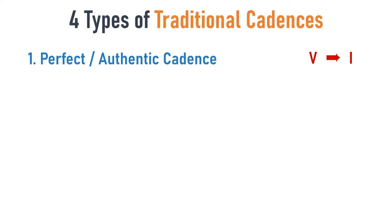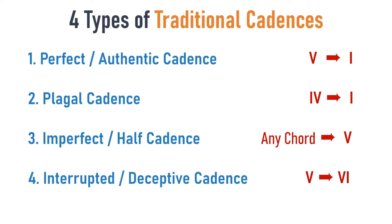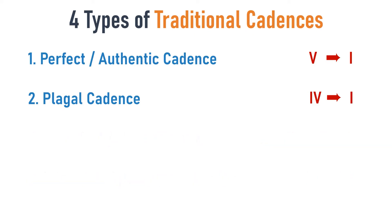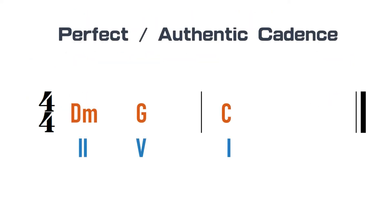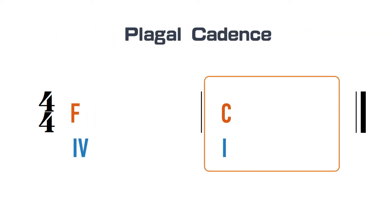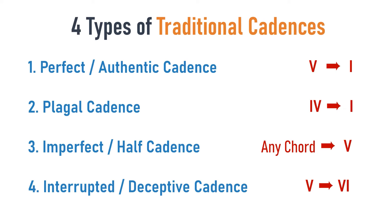In traditional music theory, there are 4 types of cadences. When you want to end a song, the normal way to end is to use a perfect cadence, which is also known as authentic cadence. Alternatively, you can use plagal cadence. Both cadences will finish the song in the home key firmly. As for these traditional cadences, I will go through them in the other videos.